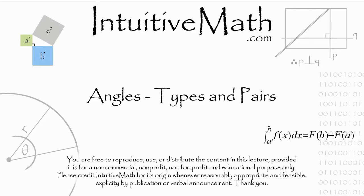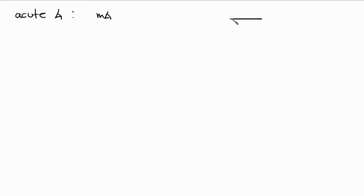Welcome back. Today we're going to talk about angles — the types and pairs of angles you'll encounter in geometry. The first angle is going to be an acute angle. An acute angle is defined like this: the measure of angle ABC is less than 90 degrees. So as long as the measure of an angle is less than 90 degrees, it's an acute angle.